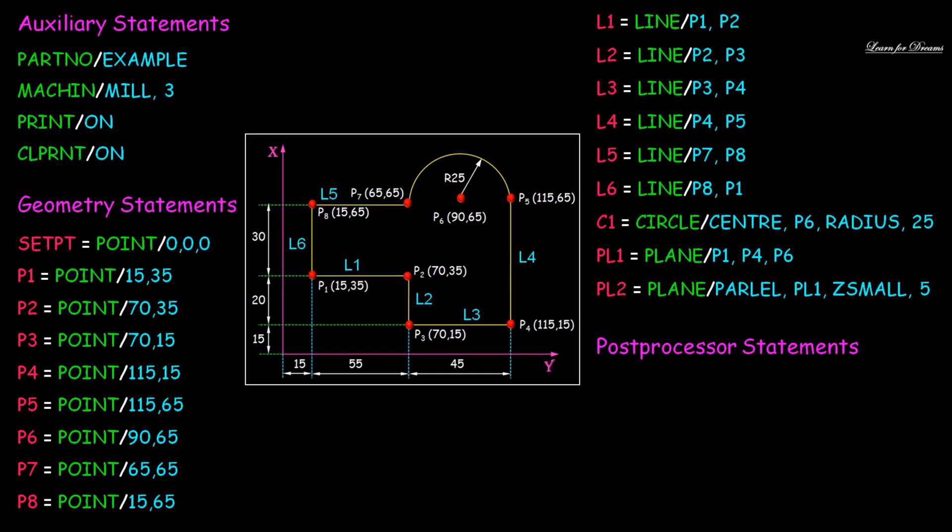Now for PL1, we have a parallel plane. The plane should be defined in the full direction. Then we have post processor statements in which we define cutter diameter, spindle speed, feed rate, spindle on, coolant on - all these commands need to be given.